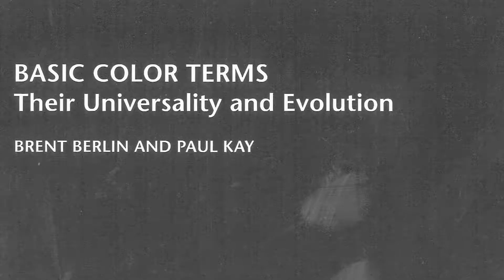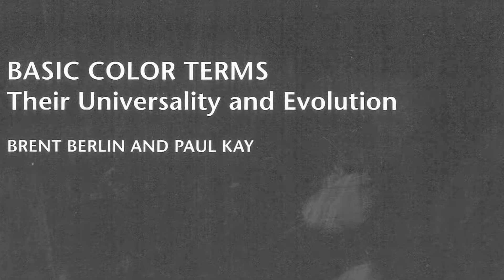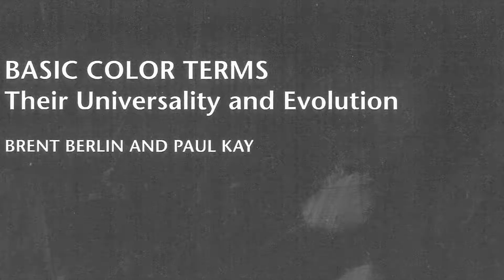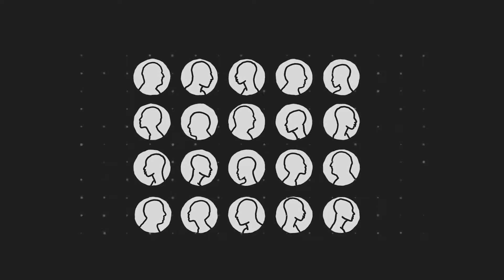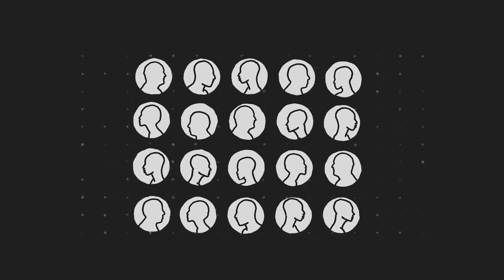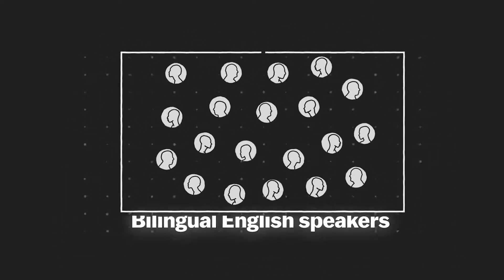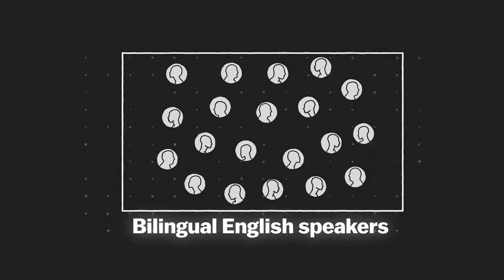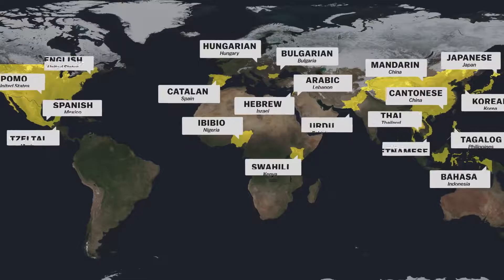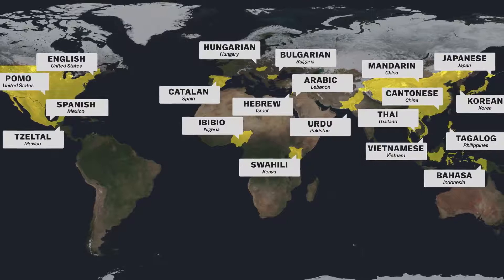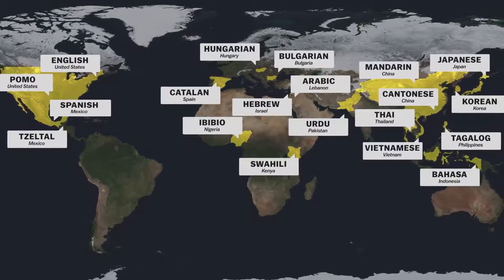Berlin and Kay didn't make those racist claims, but their color hierarchy attracted a lot of criticism. Critics pointed out that the study used a small sample size — 20 people, all of whom were bilingual English speakers, not monolingual native speakers. And almost all of the languages were from industrialized societies — hardly the best portrait of the entire world.